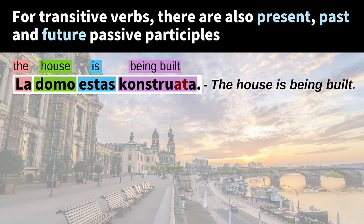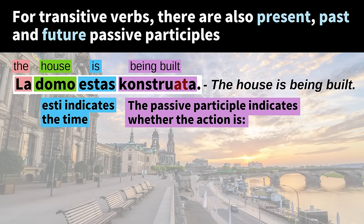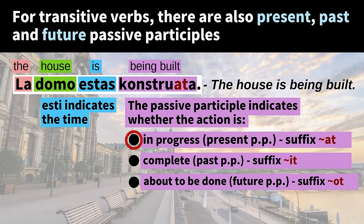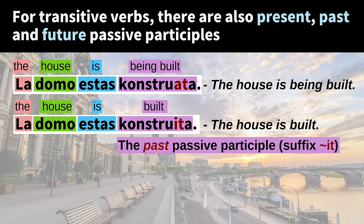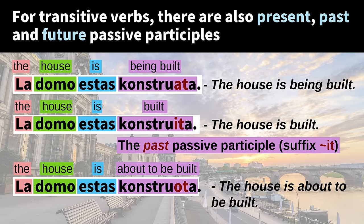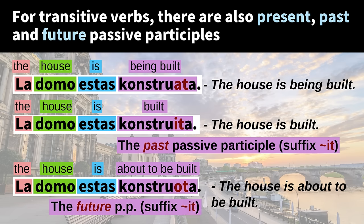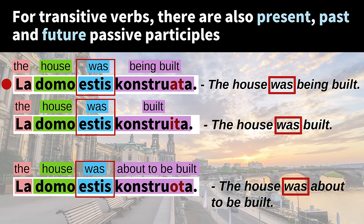For transitive verbs, there are also present, past, and future passive participles. "La domo estas konstruata" — The house is being built (action in progress). "La domo estas konstruita" — The house is built (action complete). "La domo estas konstruota" — The house is about to be built. The verb "esti" indicates the time and the passive participle indicates whether the action is in progress, complete, or about to be done. The verb could also be in the past: "La domo estis konstruata" (was being built), "estis konstruita" (was already built), "estis konstruota" (was about to be built). In my opinion, the participles are the one thing that stands out as a little difficult in Esperanto, but the verbal system is still quite simple compared to most natural languages.